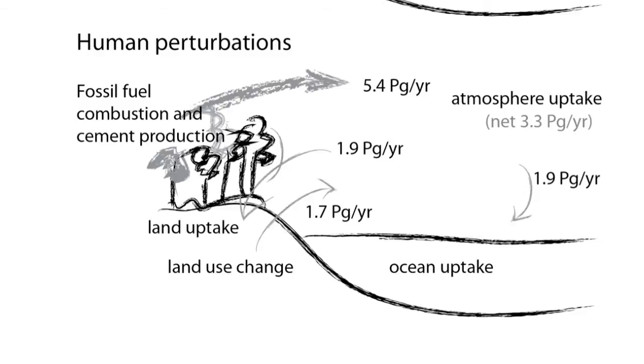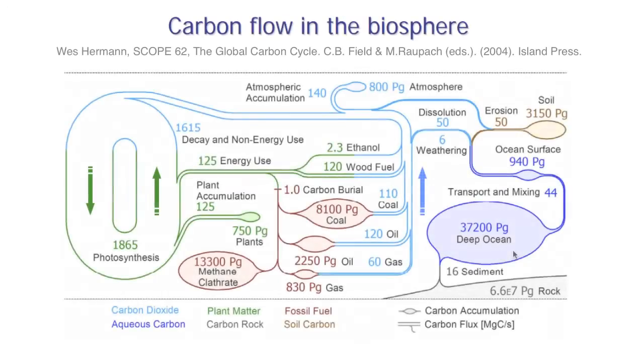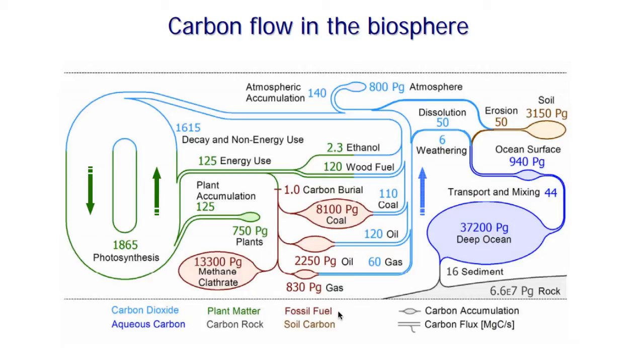I want to show you a more detailed picture of the carbon flow in the biosphere. This light blue represents carbon dioxide in gaseous form, whereas the dark blue represents carbon dioxide in aqueous form. As we said, that converts to carboxylic acid. This green color represents carbon in plant matter, whereas this gray represents carbon in rock form.